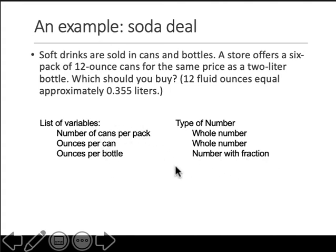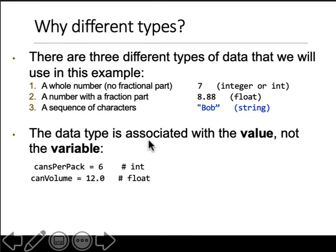In Python, you don't need to explicitly define data types — in other languages you do. In Python, the type is determined by whatever value you assign. If you define cans per pack equals 6, it is treated as an integer. If you assign 12.0, that is treated as a float, or decimal number, while 6 is an integer or whole number.